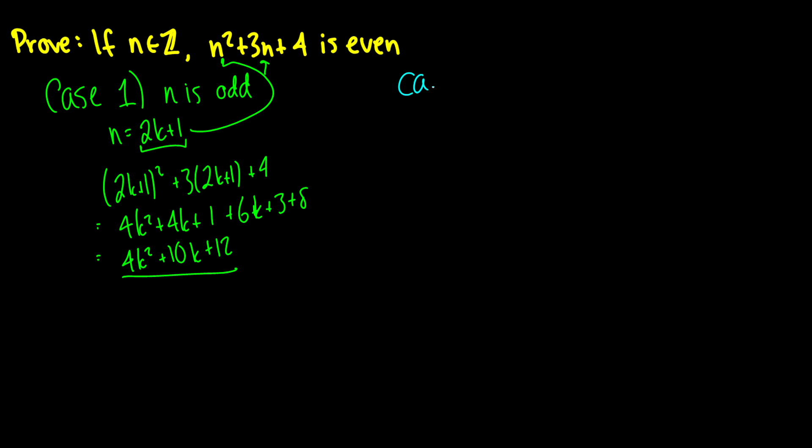Case 2, we have to say, well what if n is even now? So then n is equal to 2k. Well this should be a little bit easier to solve, at least algebraically. So we have 2k squared plus 3 times 2k plus 4, which will be 4k squared plus 6k plus 4.